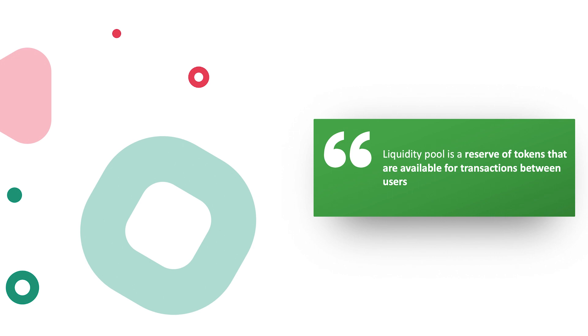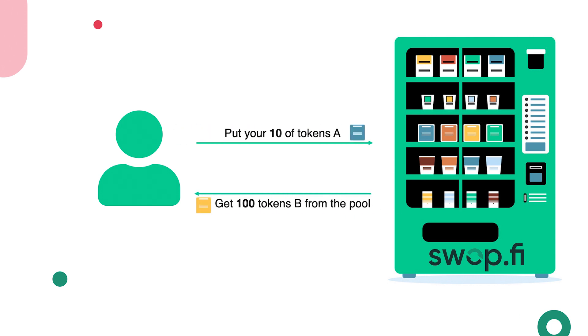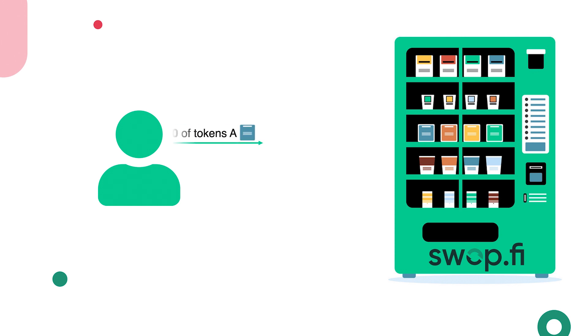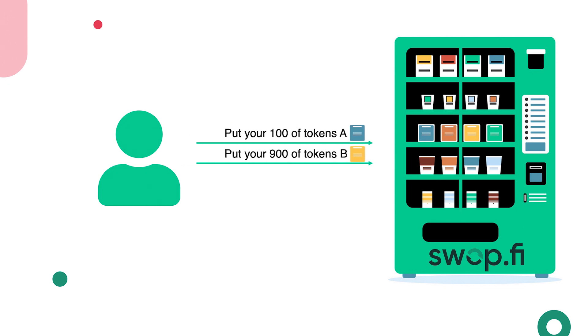Imagine a vending machine. You put money into it and automatically get a snack. A liquidity pool is somewhat similar — you put a token into it and automatically get another one in exchange. But there are three main differences. First, the price of every token changes depending on the remaining amount of that token in the pool. Second, every user can replenish the vending machine with tokens, following simple rules. Last but not least, you can put a snack into the vending machine and get money in exchange.